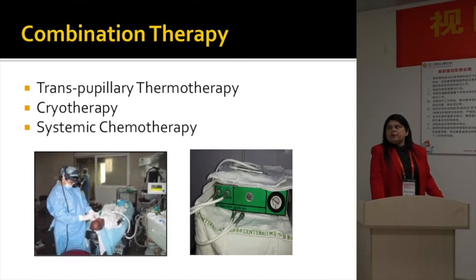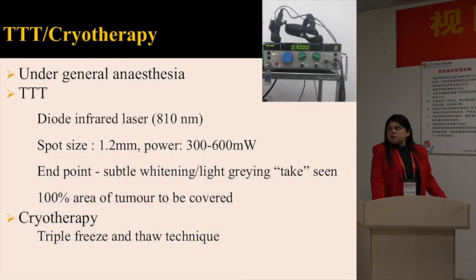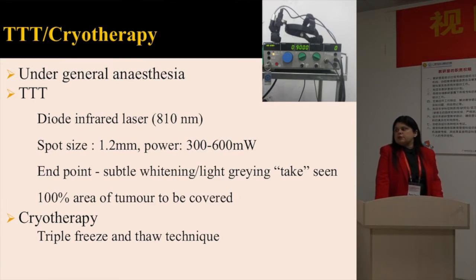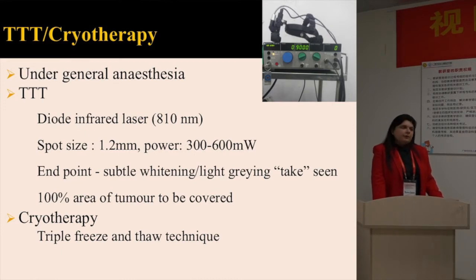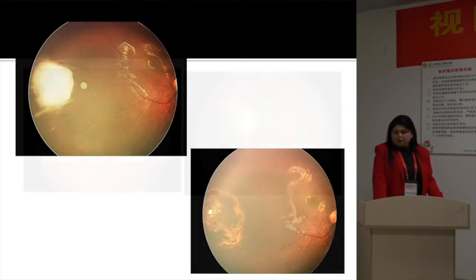At our center we use transpupillary thermotherapy for tumors anterior to the equator, combined with systemic chemotherapy. Focal consolidation is done under general anesthesia. For TTT, we use an 810-nanometre diode infrared laser with a large spot size of 1.2 millimetres; power starts from the lowest and can go up to 600–650 milliwatts. We cover the entire tumor ensuring a take is seen. For cryotherapy, we use the triple freeze-thaw technique. This shows one tumor with a nice response to this combination therapy.